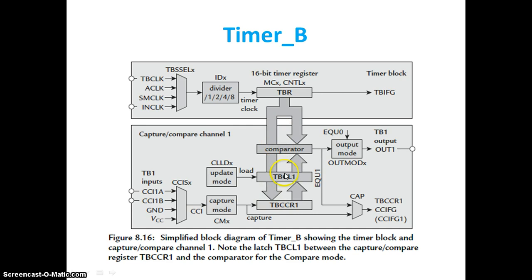The comparison is based on TBCL, not on TBCCRX directly. The value is loaded into TBCL based on the CCLDX setting — that is the update mode, controlling when the value from the TBCCRX register is loaded. With respect to output, Timer B can put all outputs into a high-impedance state directly, which was not available in Timer A.